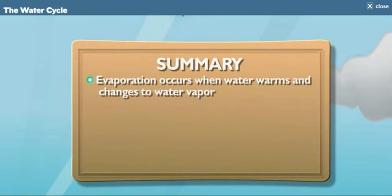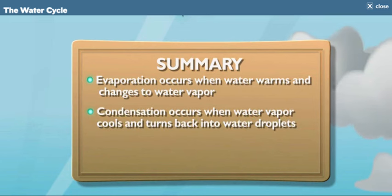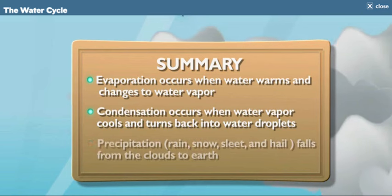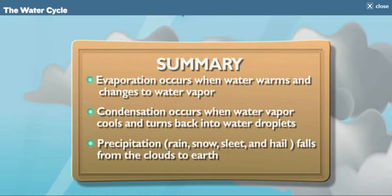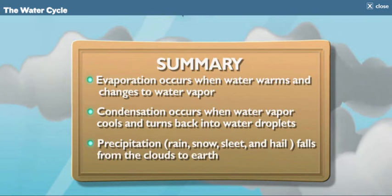So water really does travel in a cycle. When water on Earth is warmed, it evaporates and becomes water vapor, an invisible gas. As the water vapor rises into the air, it cools and turns into water droplets again. That's called condensation. Then the water droplets form clouds, rain falls from the clouds, and the cycle starts all over again.